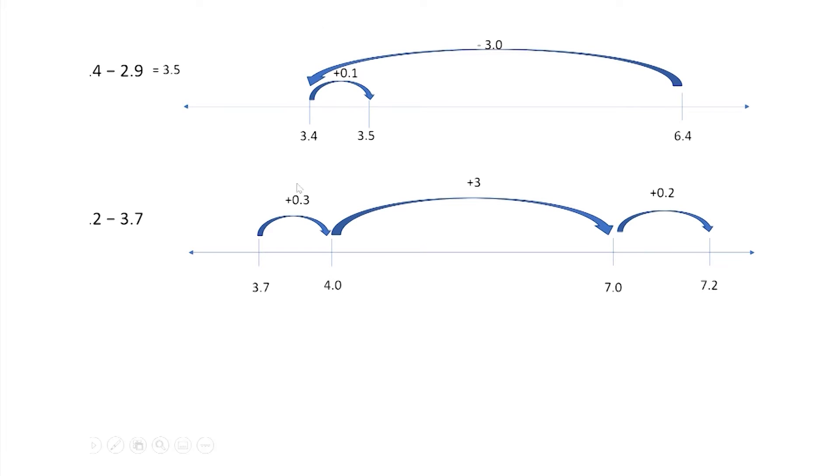So, I went 3 tenths plus another whole 3 and then 2 more tenths. How much did I go all the way? 3 and 5 tenths. So the difference between 3 and 7 tenths and 7 and 2 tenths is 3 and 5 tenths. Or, 7 and 2 tenths minus 3 and 7 tenths equals 3 and 5 tenths. One more for this string.